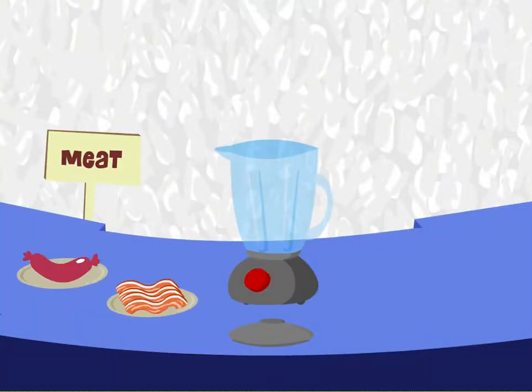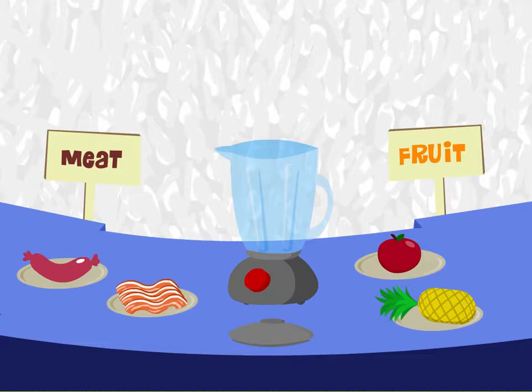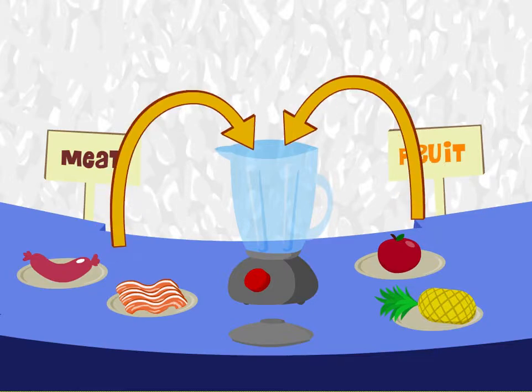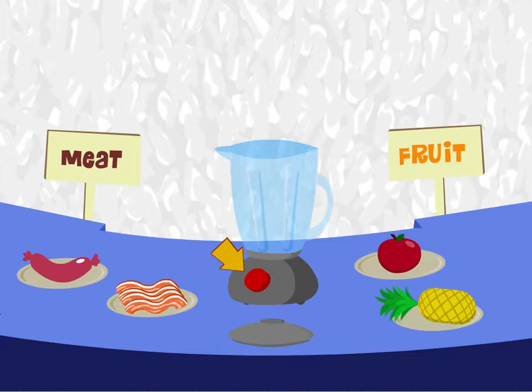Anyway, your job is to take this blender, these two meats, and these two fruits, and let me know how many different smoothie combos we can make using one meat and one fruit. Ready? Let's go! Okay, drag one meat and one fruit to the blender, then click the blender button to smoothify.